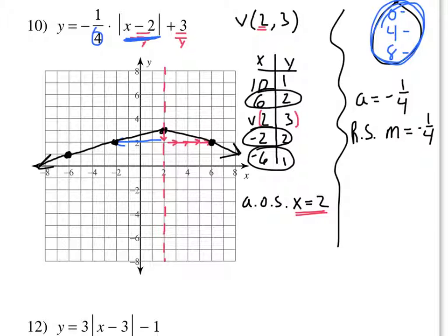If you're going to plot points, help yourself out and pick friendly numbers. If you didn't pick friendly numbers, it would still work, but you'll end up graphing fractions, which is not nearly as easy or fun. Any other problems you want to see? Number nine.